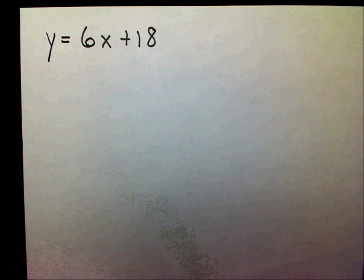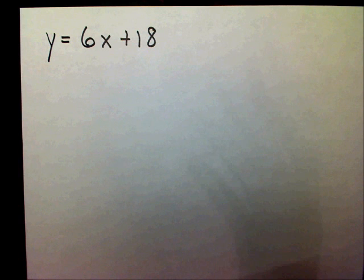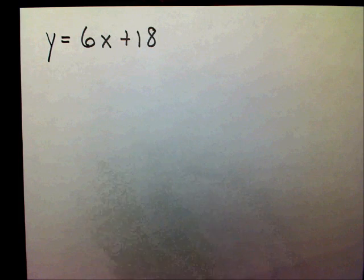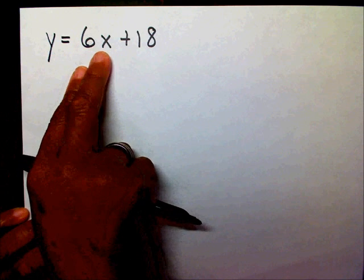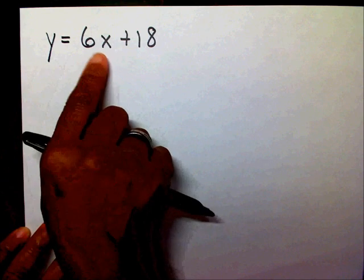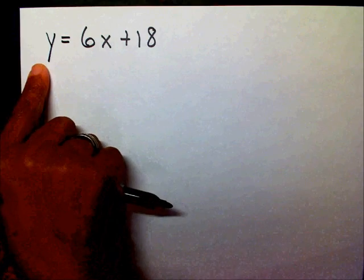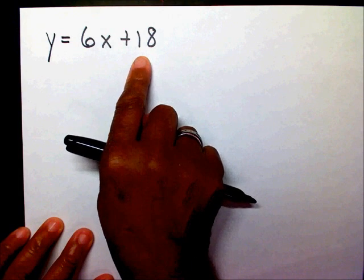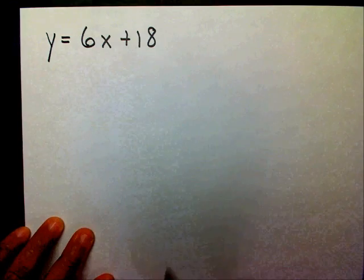In order to change our slope intercept form into standard form, we need to end up with our x and y terms on the same side. This is my y term, this is my x term — they need to be on the same side. Since my y term is already on the side by itself, I just need to move this x term over. Another way of saying this: I need to isolate my constant term. This number needs to be on the side by itself.